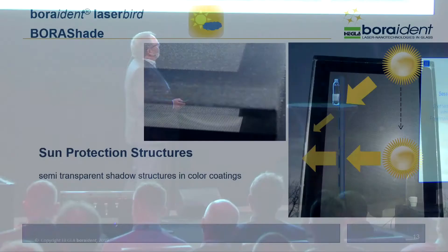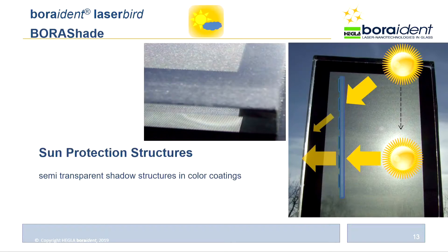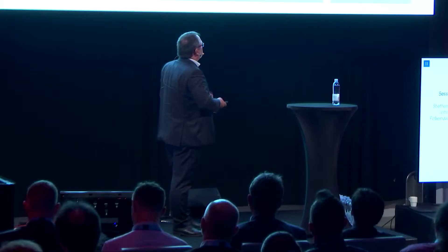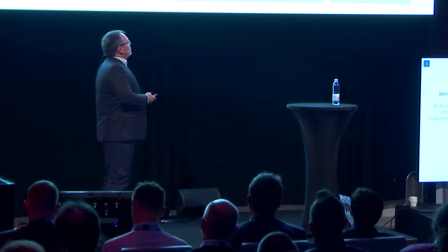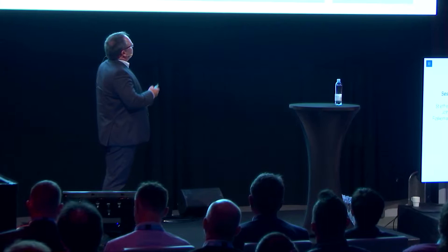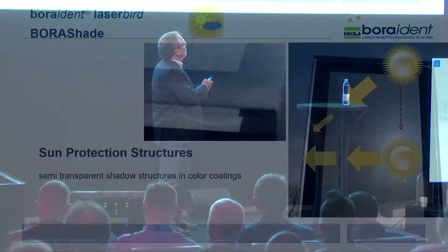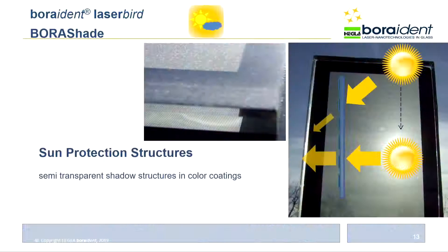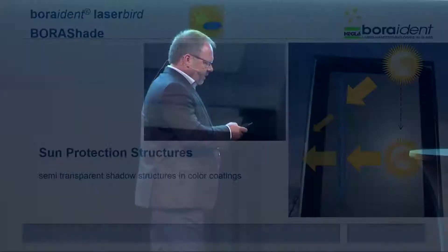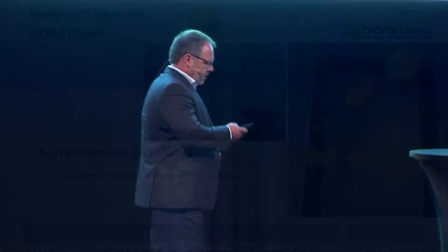Another application involves thicker coatings at the glass surface — screen-printed coatings with thickness of 20 or 50 microns. Here it is possible to make holes with the laser. In cross section: the glass pane has a color layer 20–50 microns thick. Making holes creates a shadowing effect dependent on sun angle. When the sun is high, transmittance inside the building is low; when the sun is lower, transmittance is higher. This is an application for thick coatings.